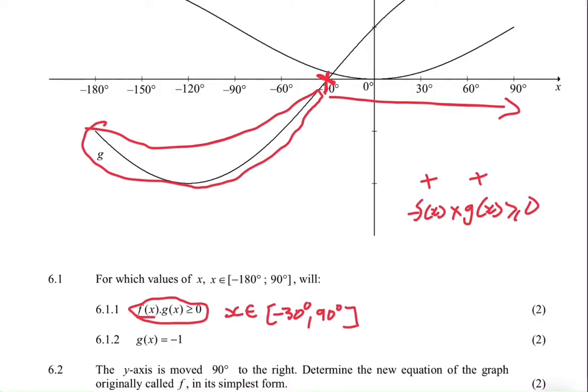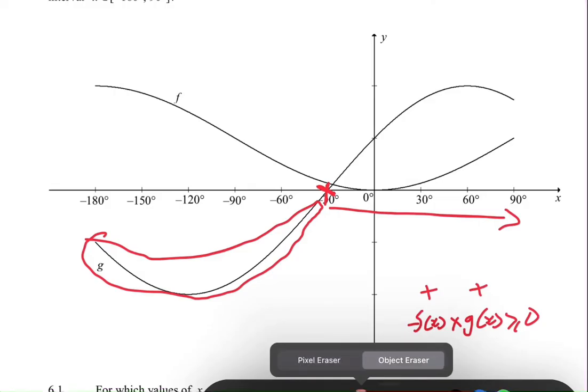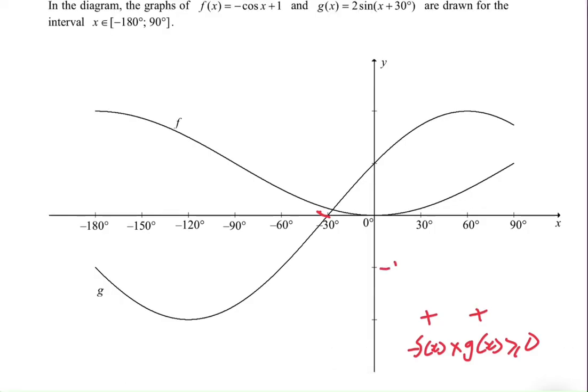Question 6.1.2 says: let's look for values of x where g(x) equals -1. Let me just erase this and let's look at g(x). So g(x), we're looking for values equal to -1. This is -1 and this is -2.